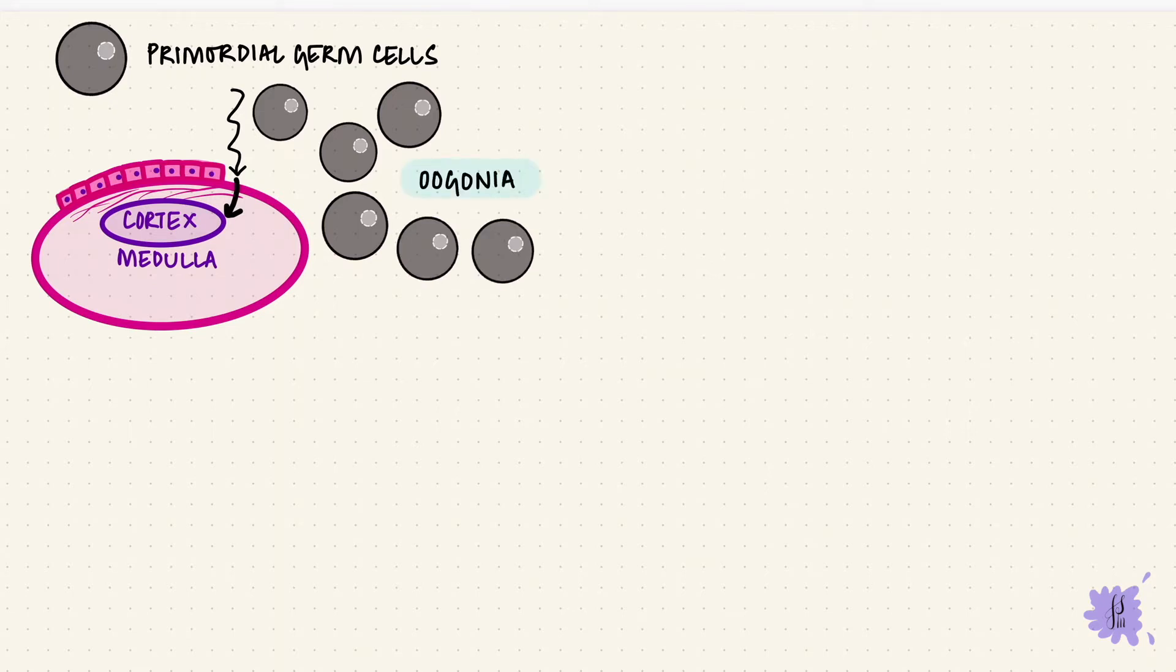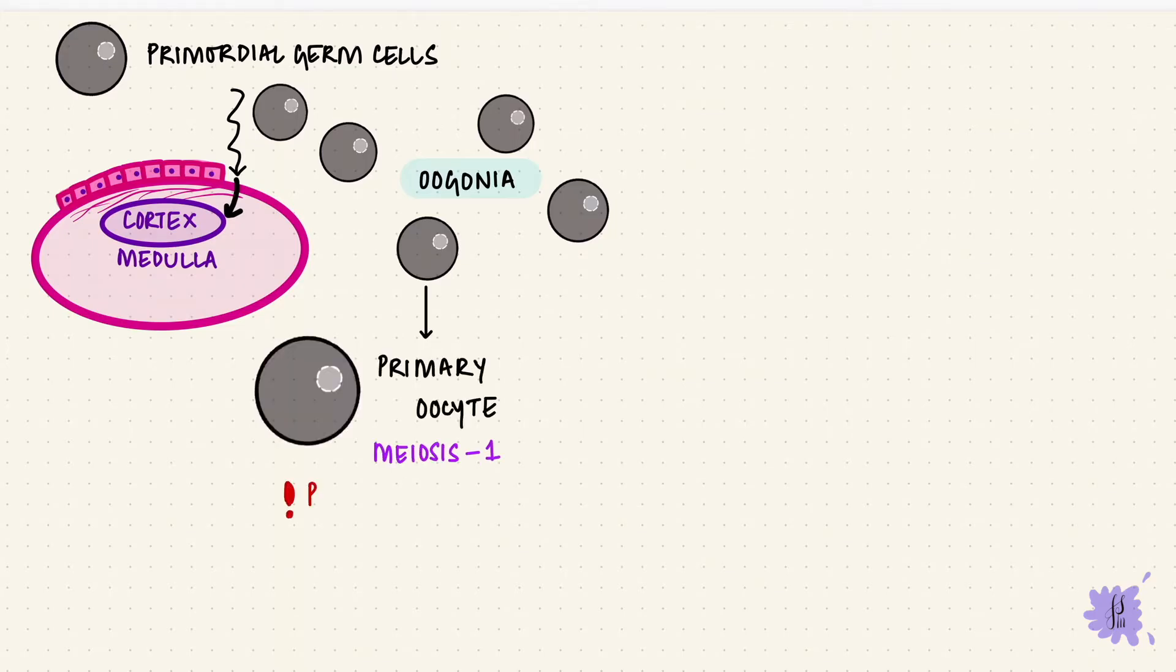The oogonia undergo more mitosis to form more cells up to around five months of gestation. Then some of them start degenerating. But what remain, they enter the first meiotic division. And these are the primary oocytes. They get stuck in prophase one of the first meiotic division. So that's the first meiotic arrest. And all of this happens until birth. So these are the cells that are there at birth, and they stay stuck here until puberty.